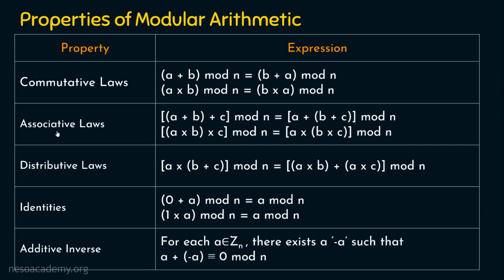The associative property states: ((a + b) + c) mod n = (a + (b + c)) mod n. Similarly, the same is true for multiplication: ((a × b) × c) mod n = (a × (b × c)) mod n. In the distributive law: a × (b + c) mod n = (a × b + a × c) mod n. Always remember to suffix mod n — don't forget it.